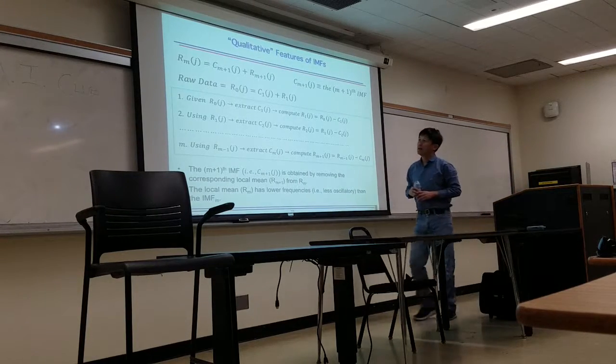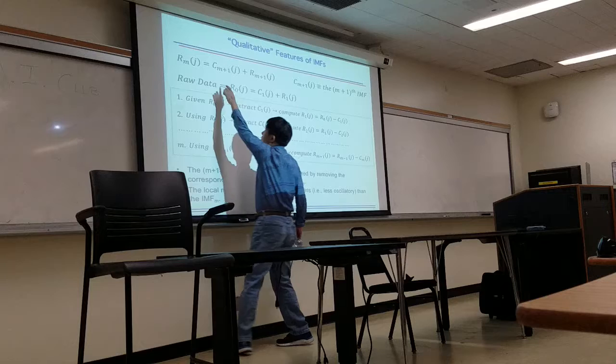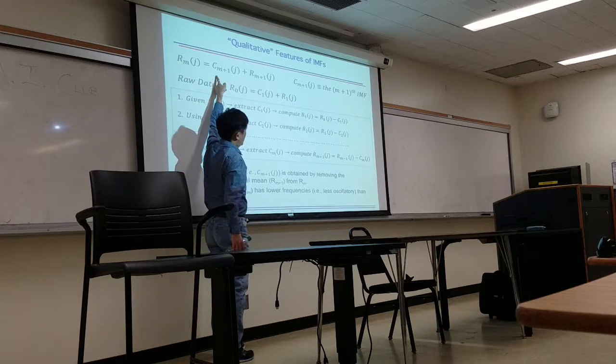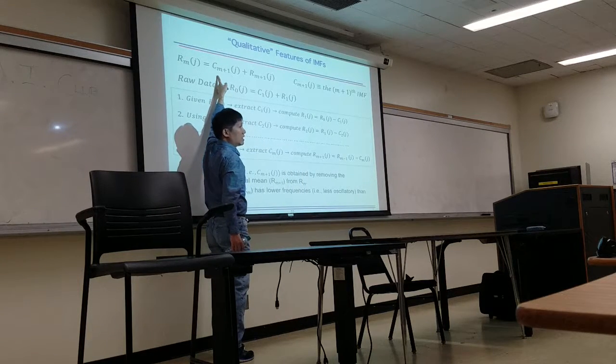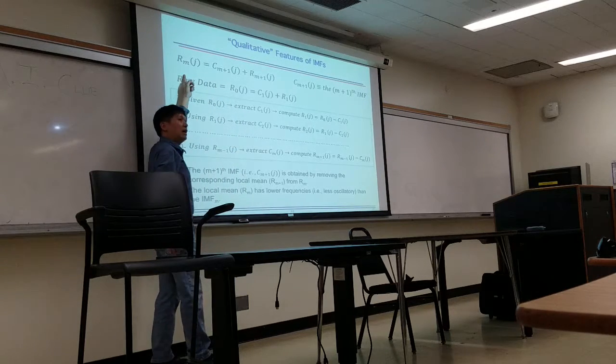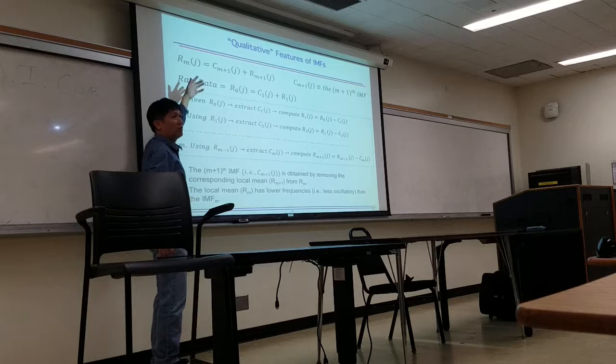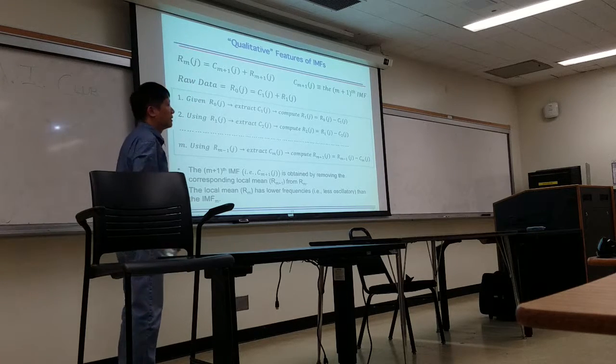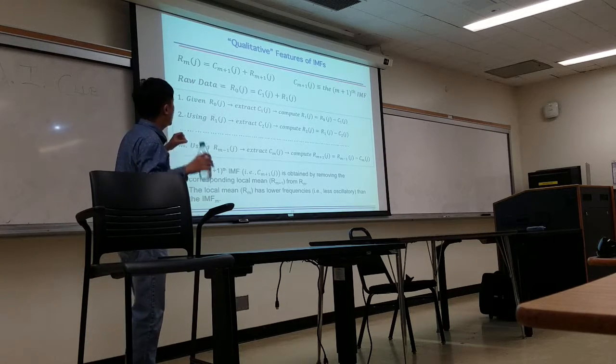What does this mean? The C sub N plus one is IMF, you can view this as kind of an oscillatory one. The R we call kind of a residual, that's why we use R. Or you can also view like a non-oscillatory one, in a way.